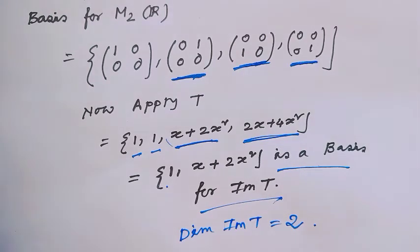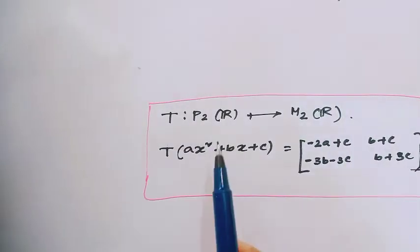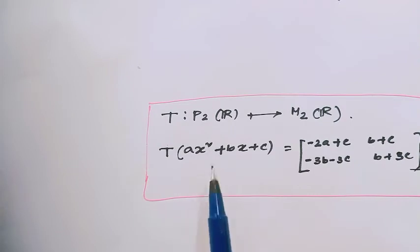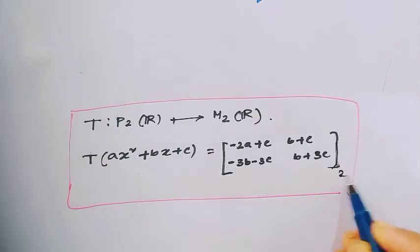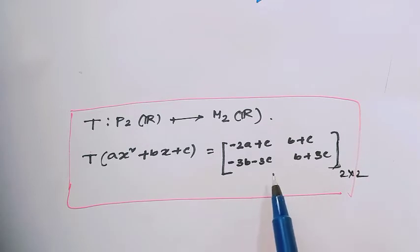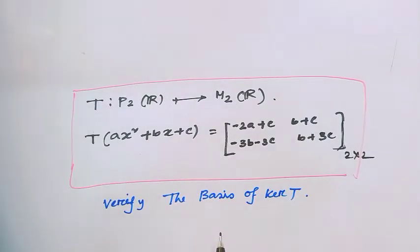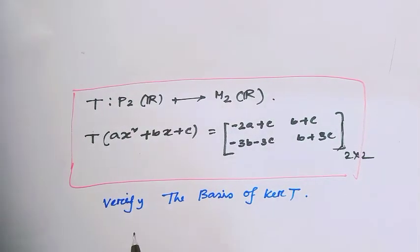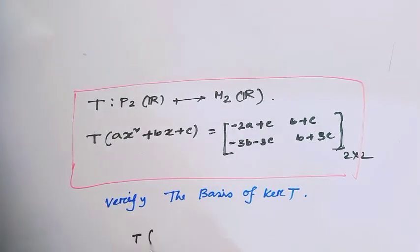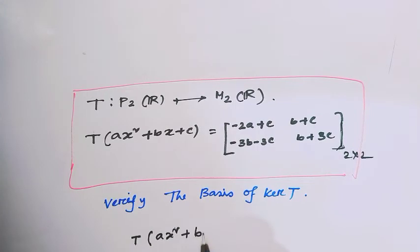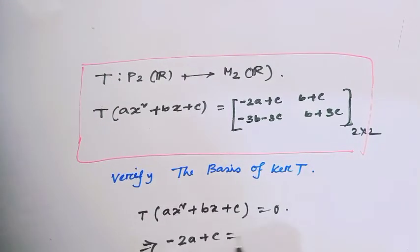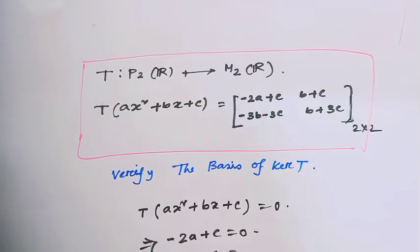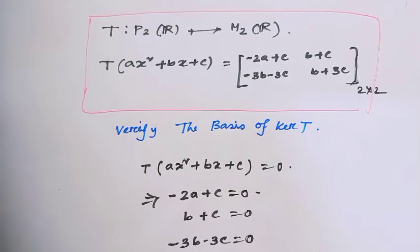Here we have another example: a linear transformation from P2(R) to M2(R) such that T(ax² + bx + c) = [−2a + c, b + c; −3b − 3c, b + 3c]. Now verify the basis of kernel T. To find kernel T we set T(ax² + bx + c) = 0, which gives: −2a + c = 0, b + c = 0, −3b − 3c = 0, and b + 3c = 0.